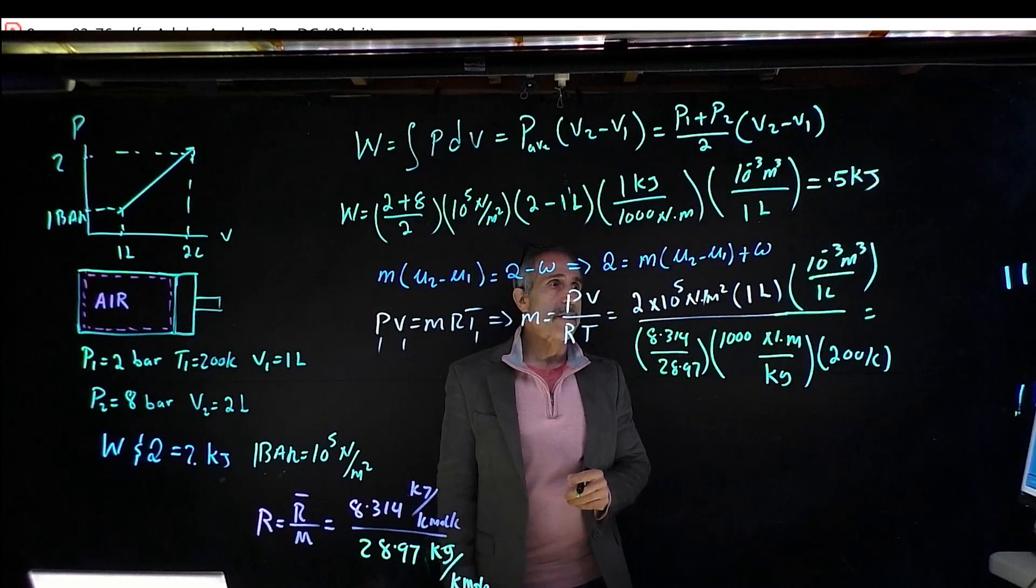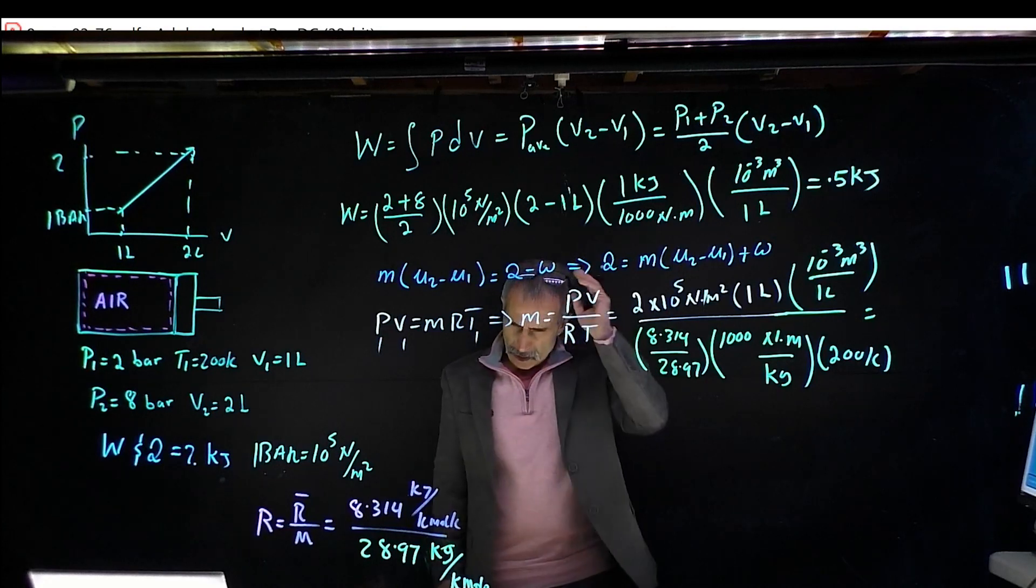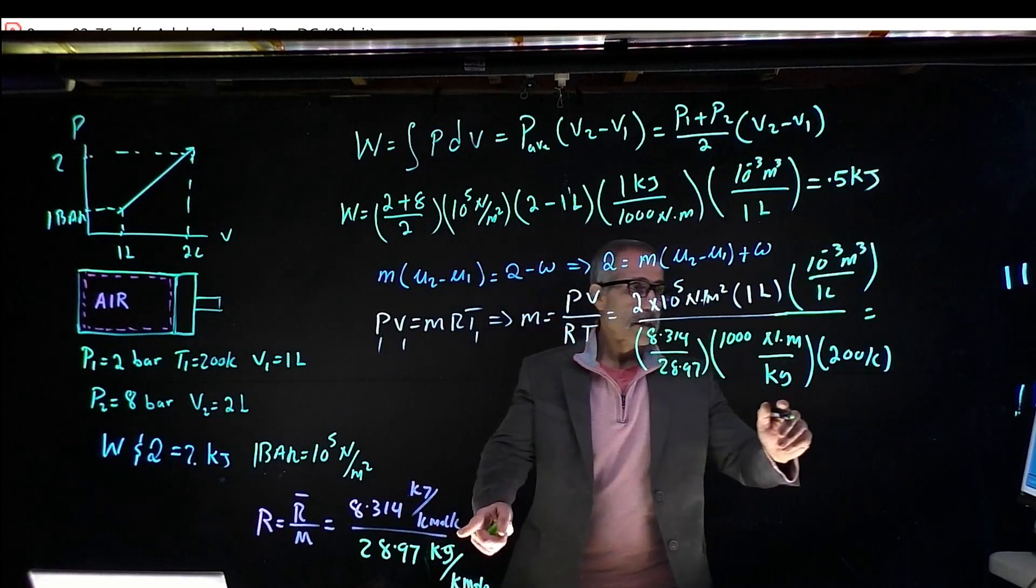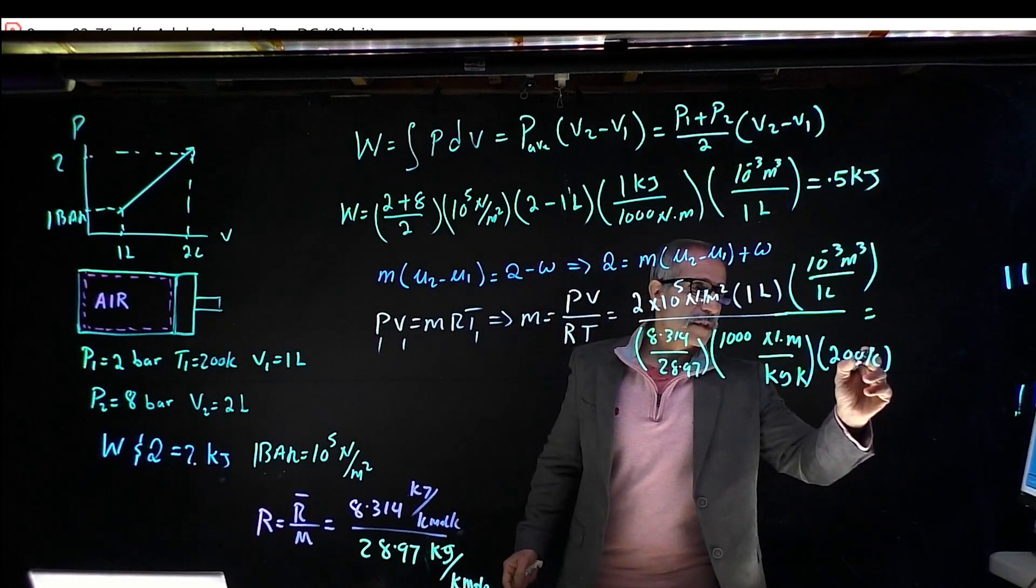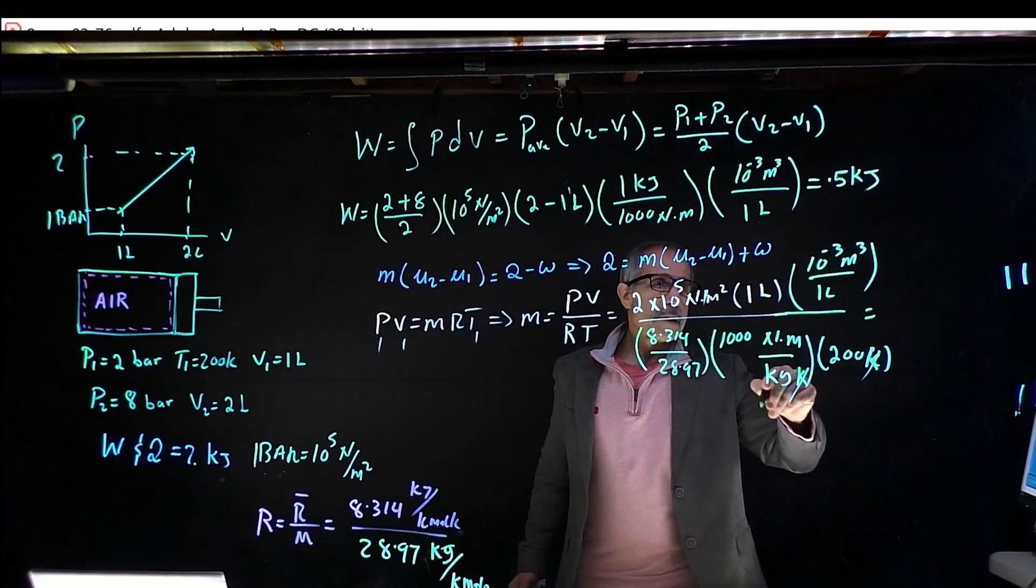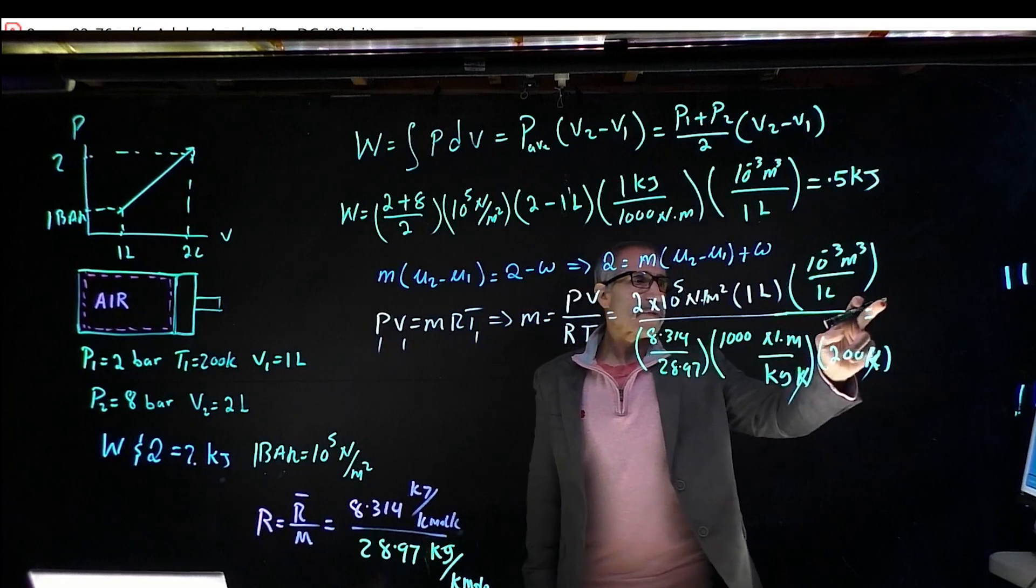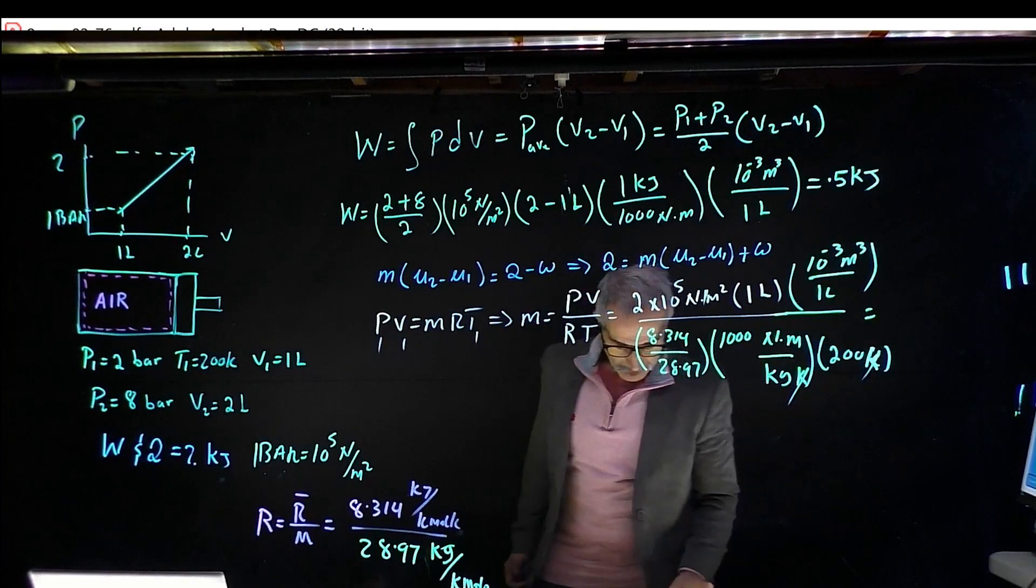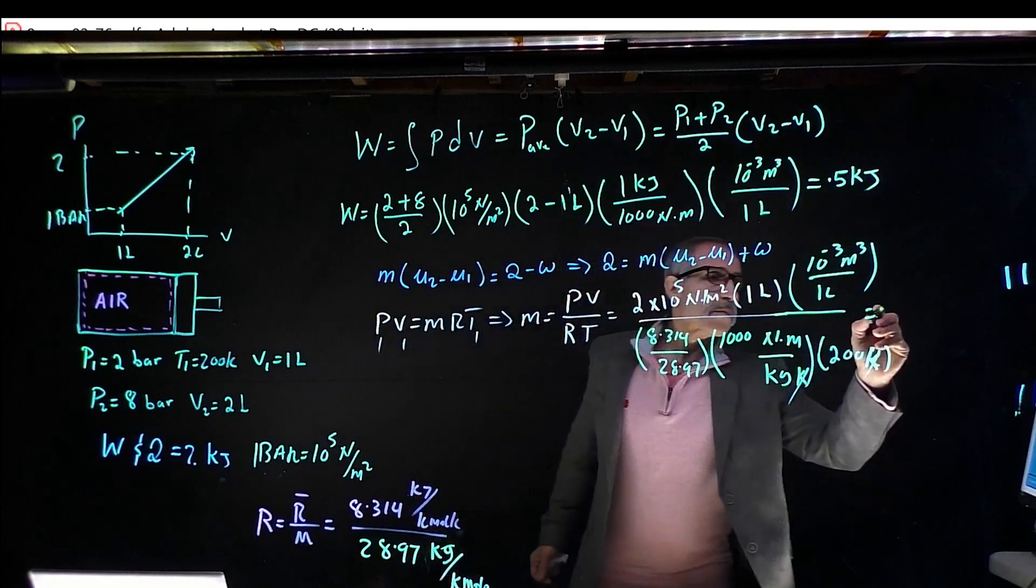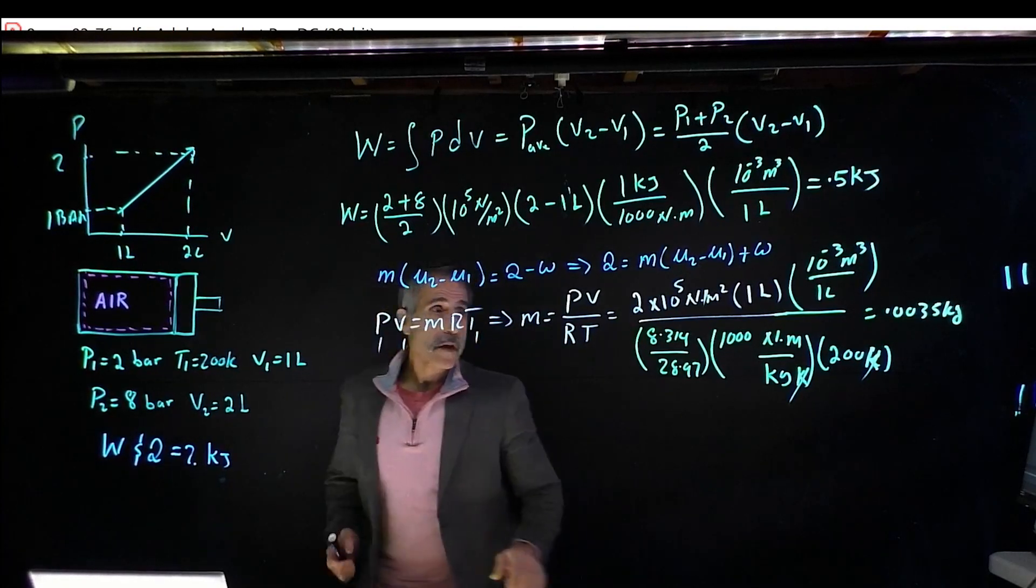This Kelvin is going to cancel with that Kelvin. 1000, that's a K, and they're going to cancel out. The kilogram is going to go on top. Newton-meters is going to cancel out. All I have left over is kilograms, and that's going to come out to 0.0035 kilograms.